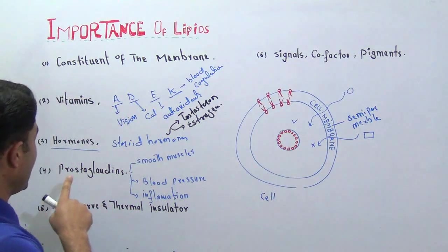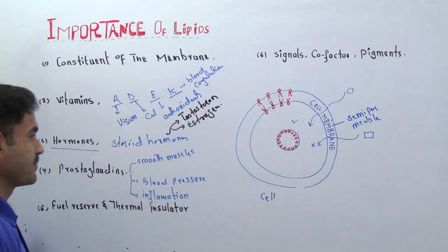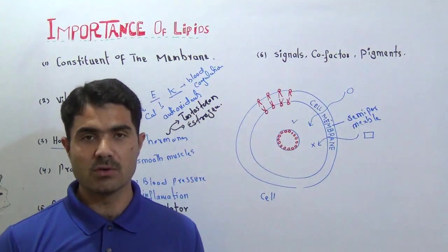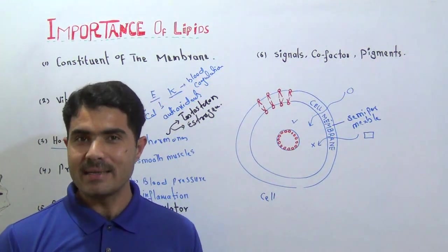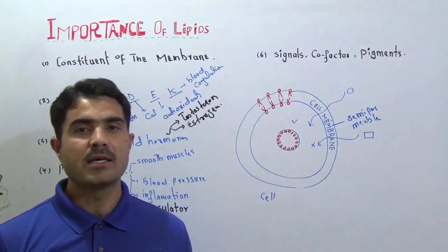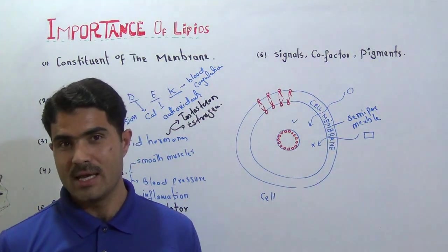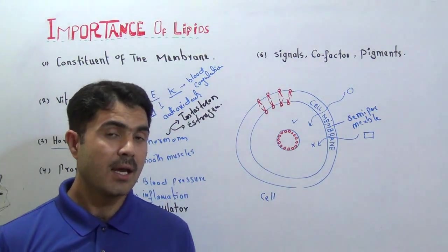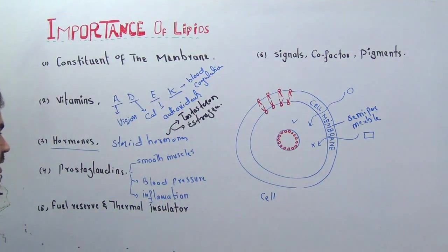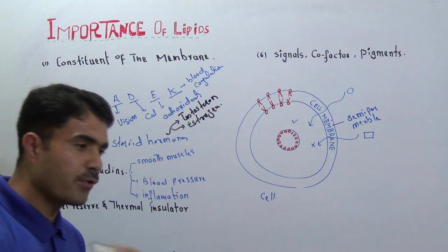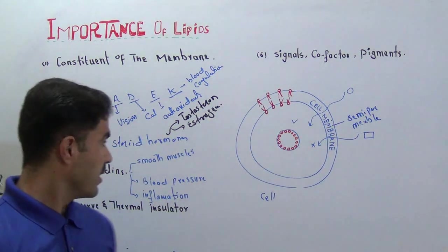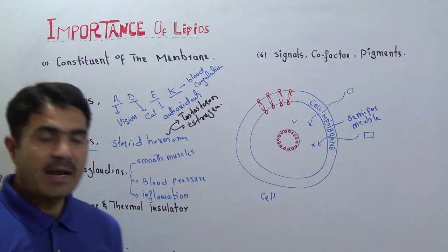Then we have prostaglandins. Prostaglandins are not a single molecule but represent a family of molecules that we cannot cover all today. These are molecules with different structures that serve different roles in the body.